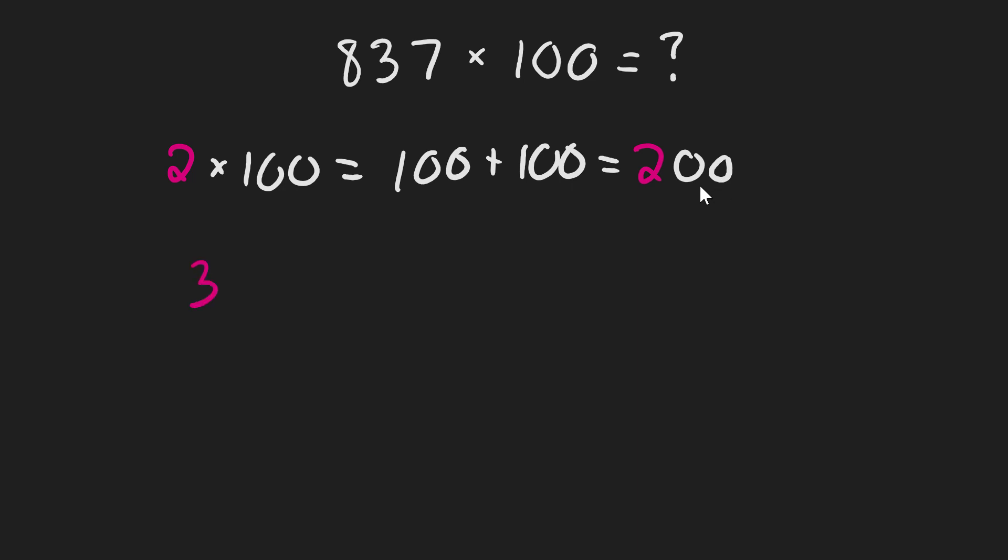Or if we take a look at 3 times 100, 3 times 100 is 300. And so in general, when we multiply a number by 100, all we have to do is append two zeros to the end of that number to get the correct answer.